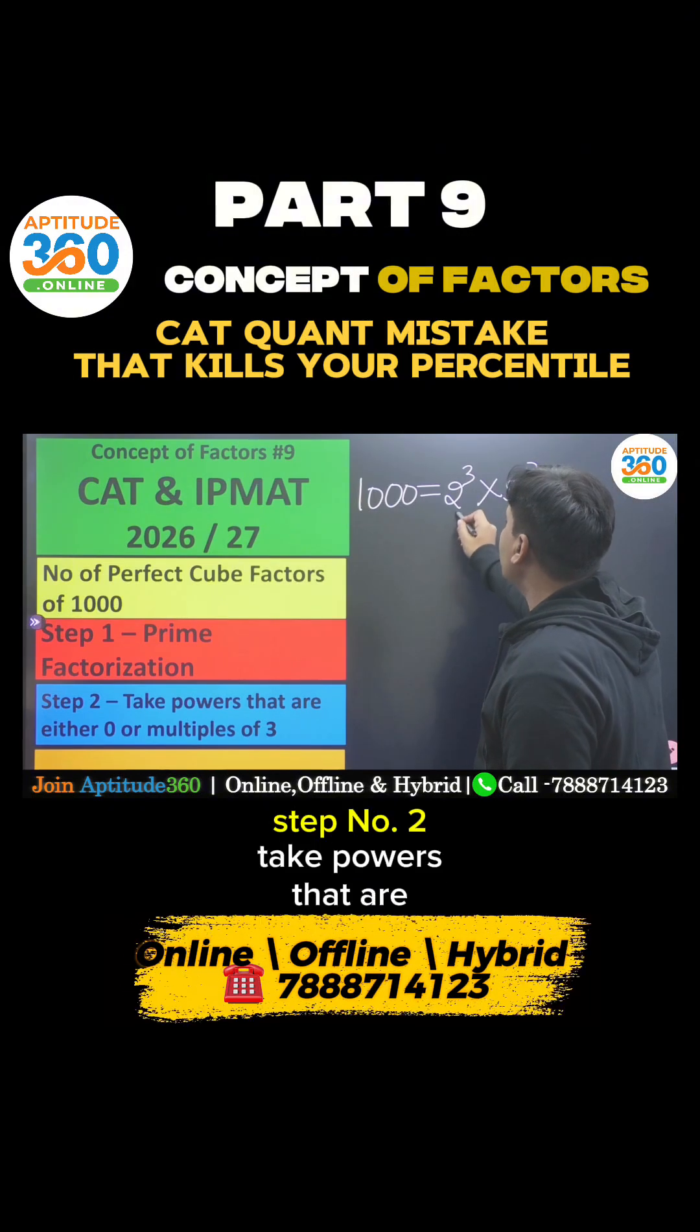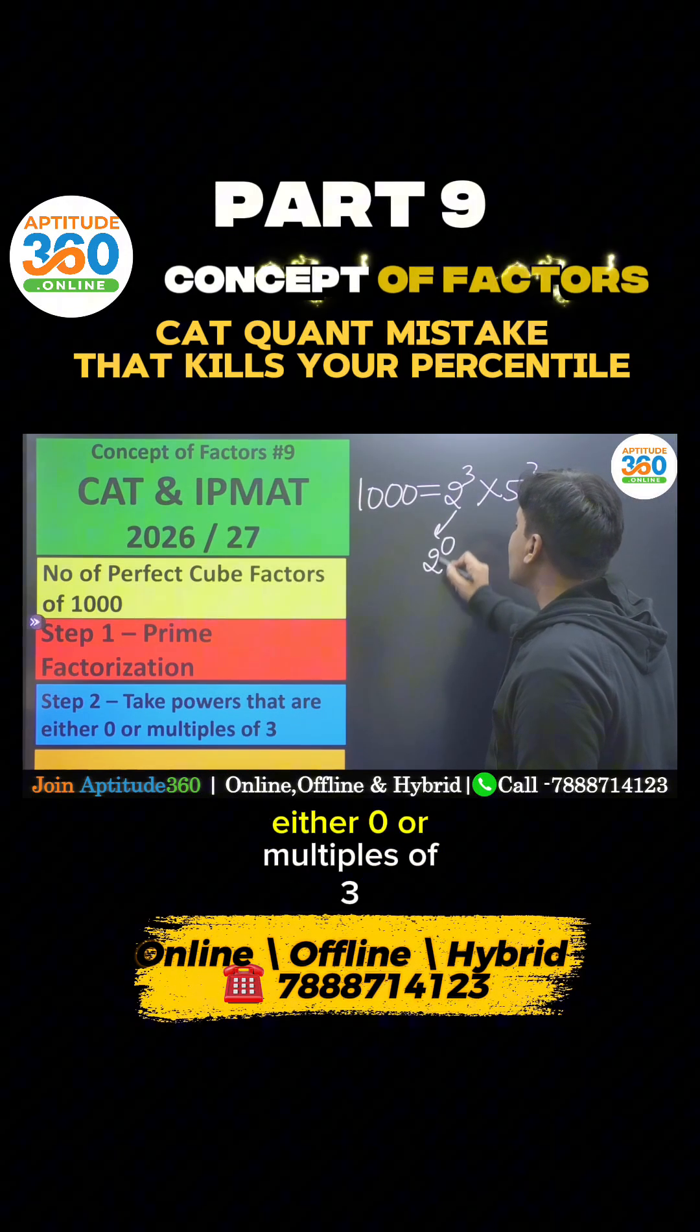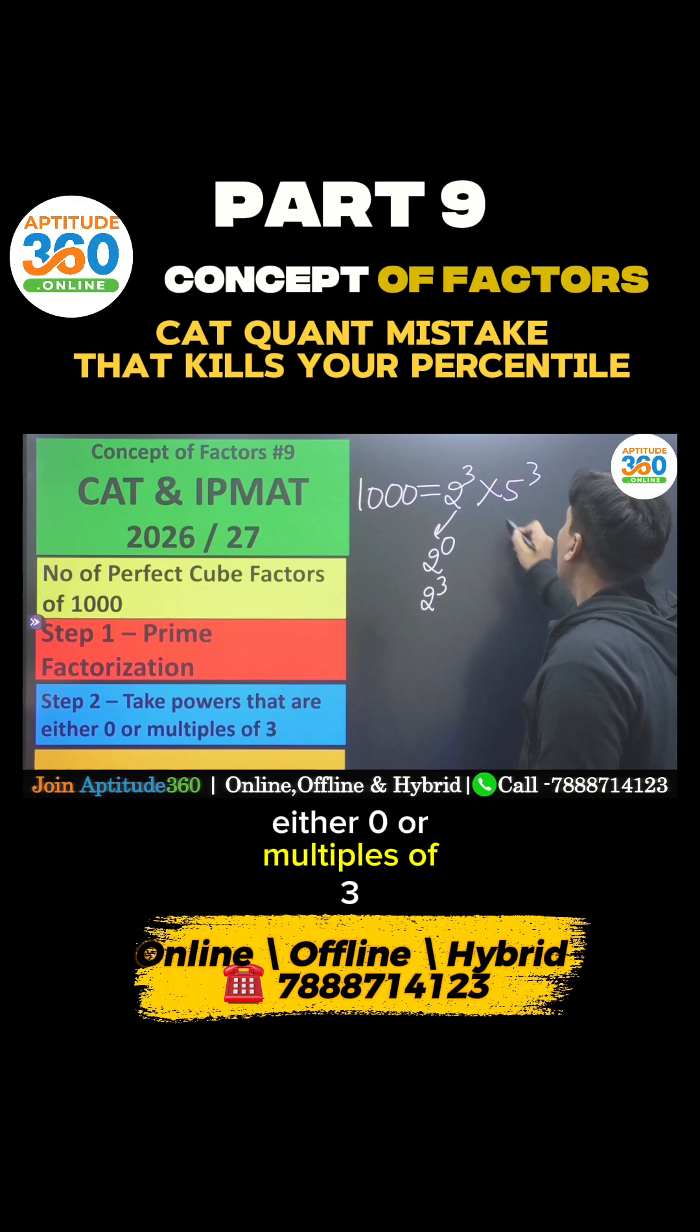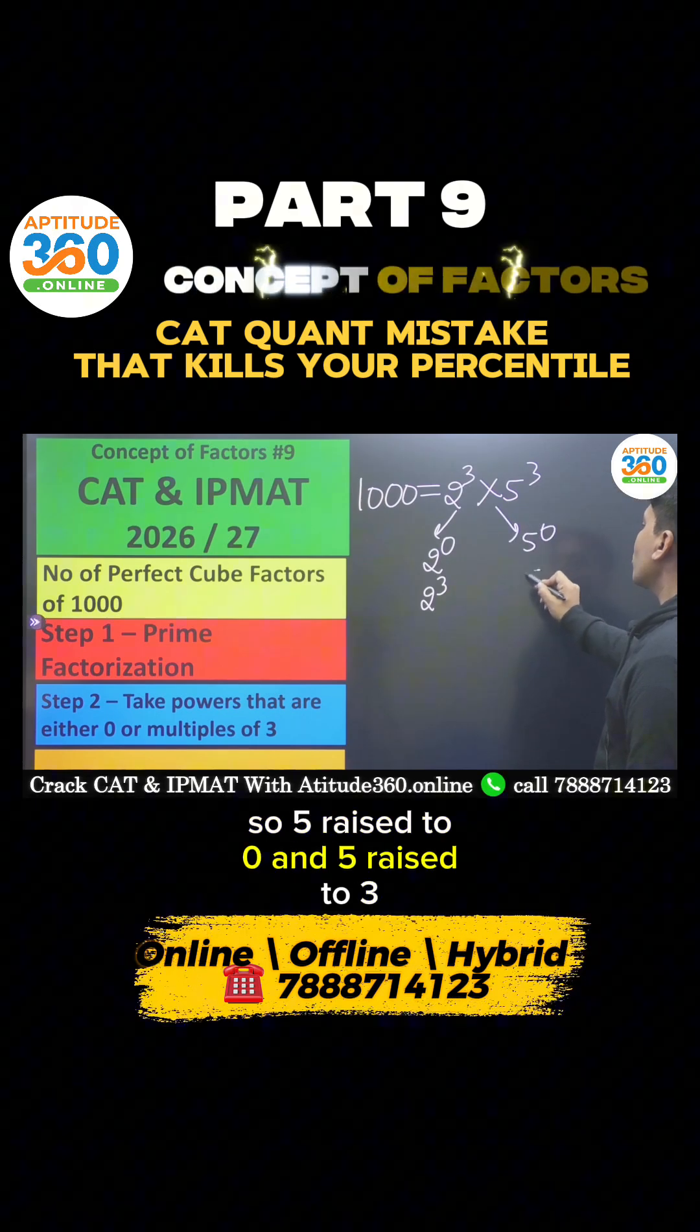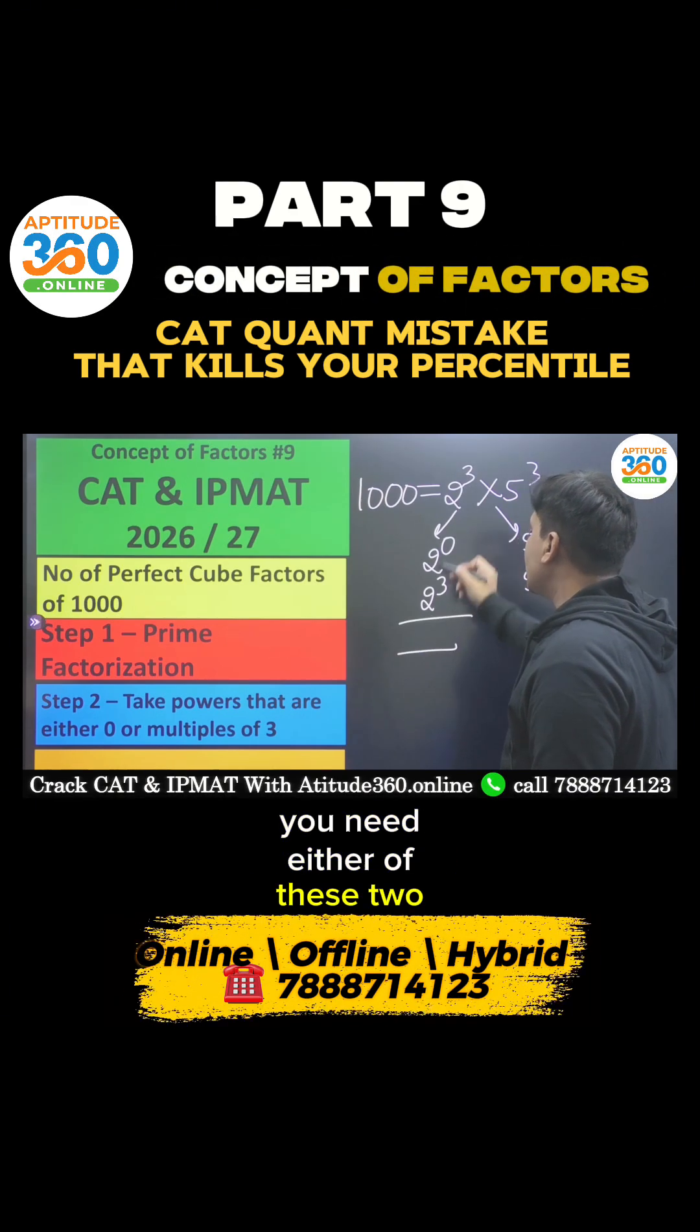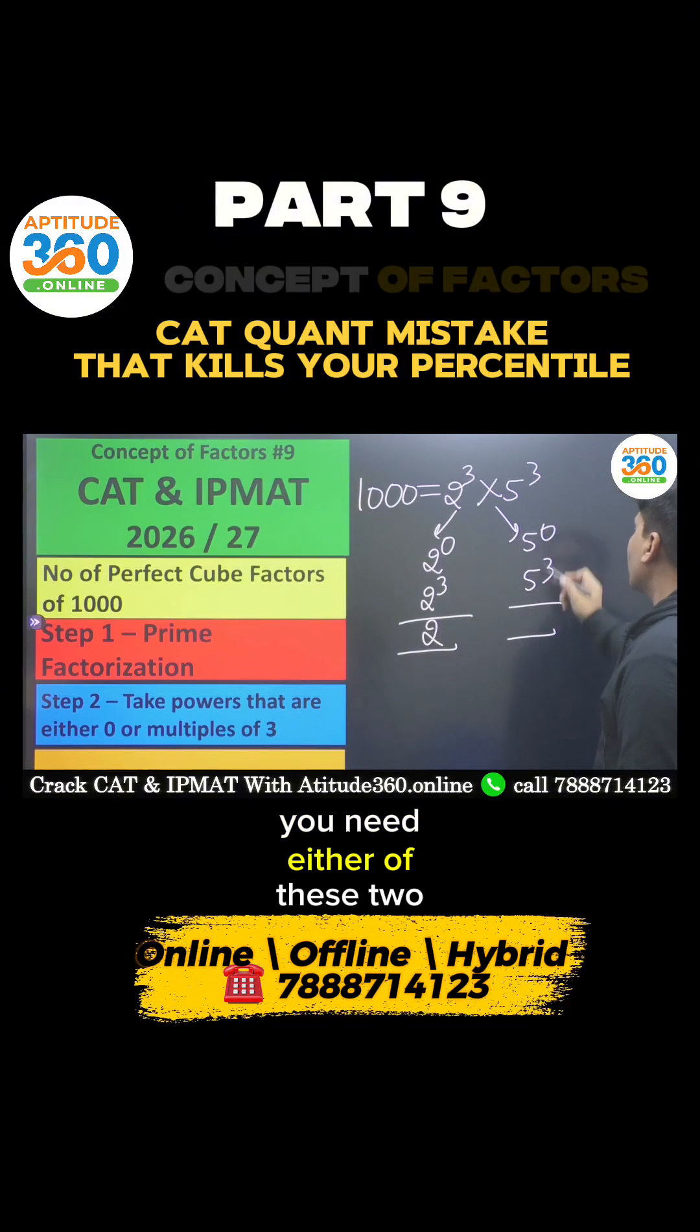Step number two, take powers that are either 0 or multiples of 3. So 5 raised to 0 and 5 raised to 3. You need either of these two numbers, one of them and one of them.